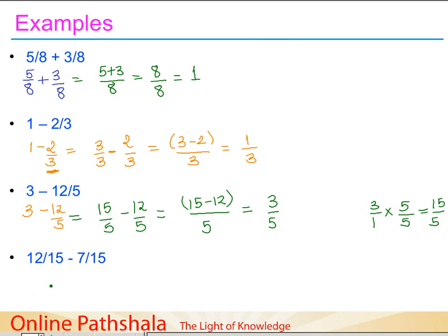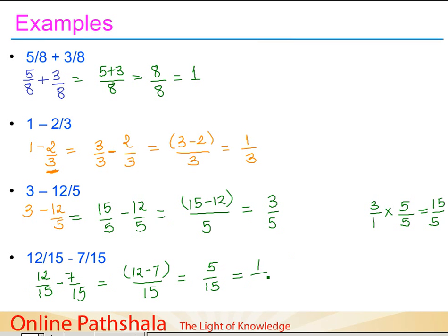Example 4: Subtract 7 by 15 from 12 by 15. This is a straightforward case — simply subtract the numerators and retain the common denominator. So 12 minus 7 gives 5 by 15, which simplifies to 1 by 3. This concludes our discussion on adding and subtracting like fractions.